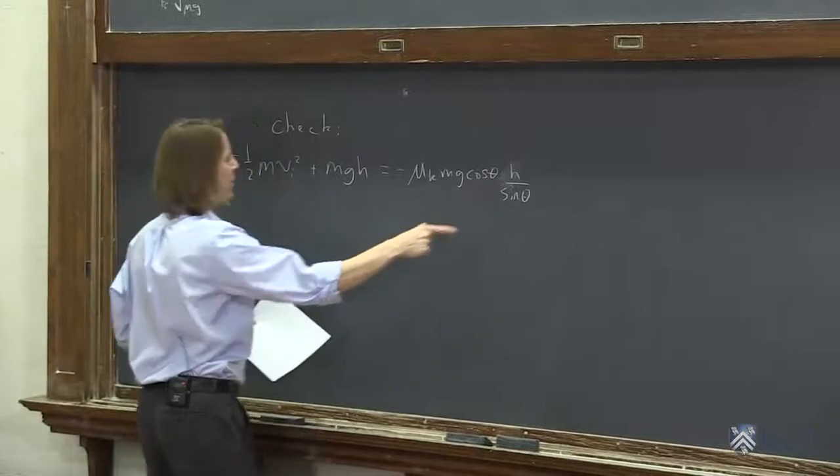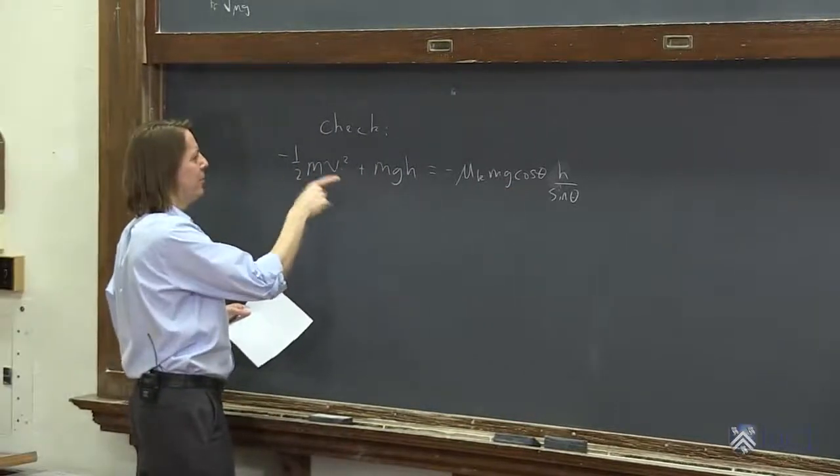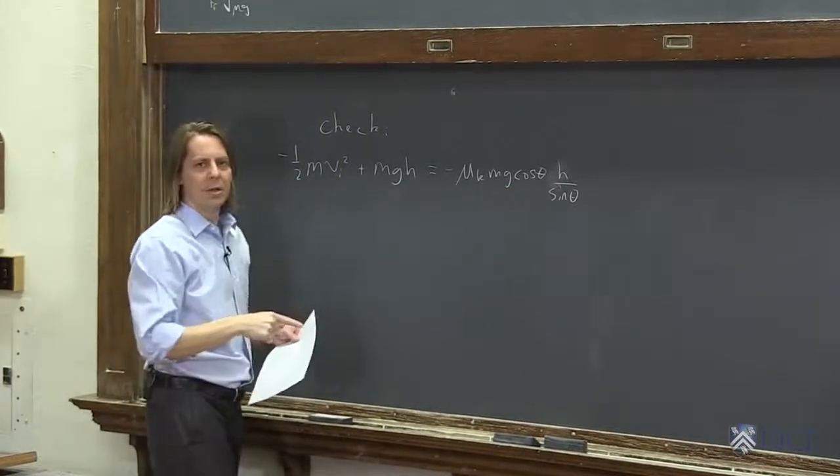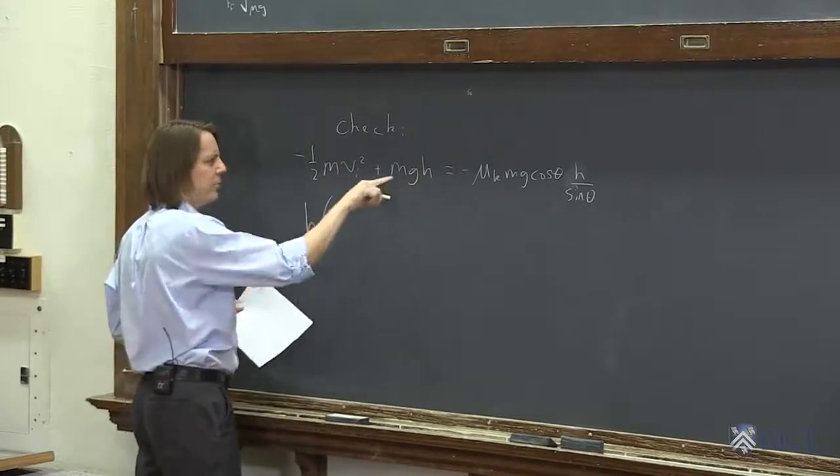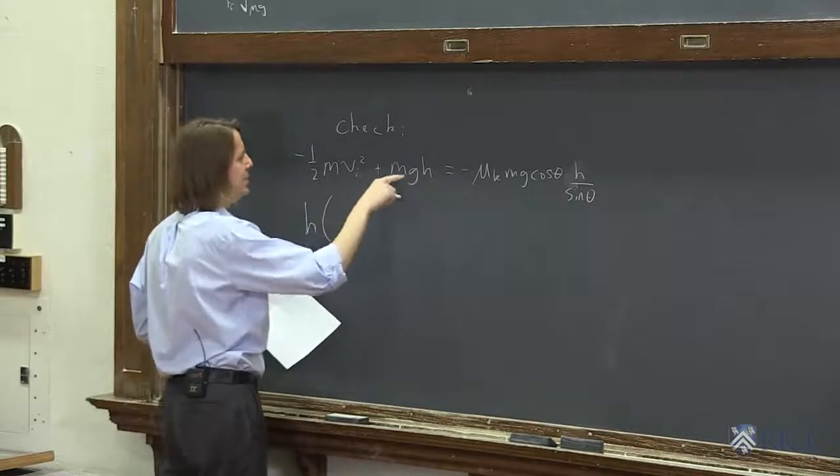And all we've got to do is solve this for h. So this term is negative, we'll bring it over here. Now we have two positive terms. This term is negative, we'll bring it over there. So all the terms are positive now, and we just want to pull an h out. h times, what's left here? mg. Oh, every term has an m in it. Let's get rid of the m's.